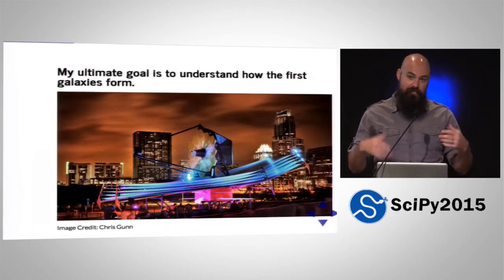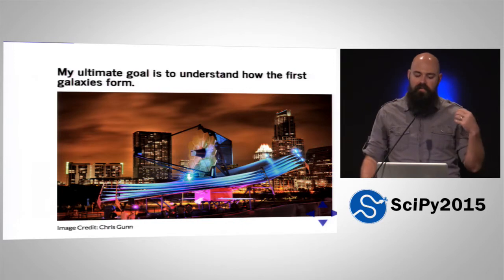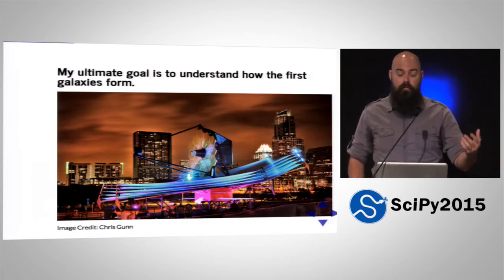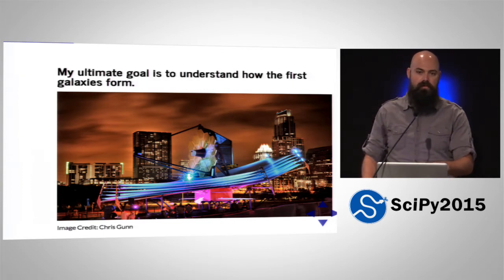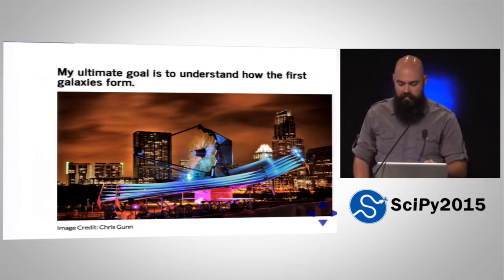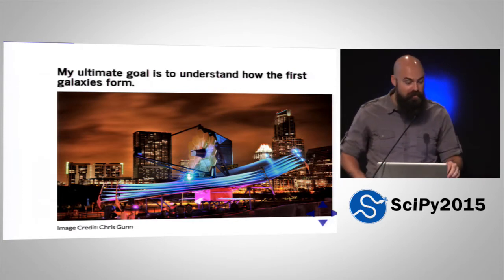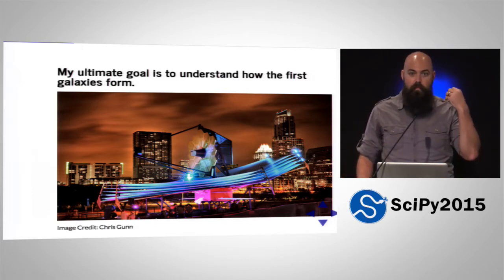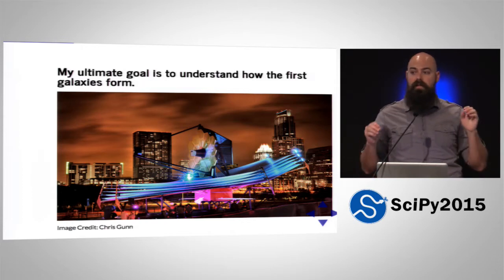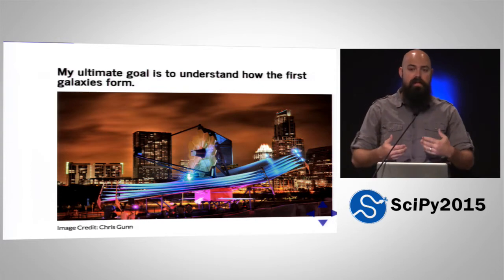A little bit of background since I'm in the general session here. The goal is to understand how the first galaxies — and before that, the first stars — form, so that when this telescope, the James Webb Space Telescope, launches — it's Hubble's successor — we're going to be able to see further out into the universe than we've ever been able to see before. We want to have some idea of what we're going to see when that happens.